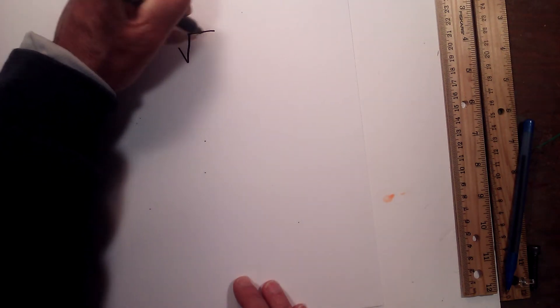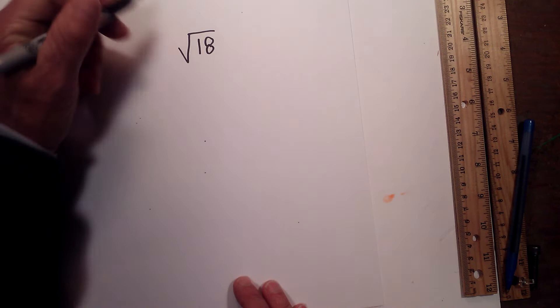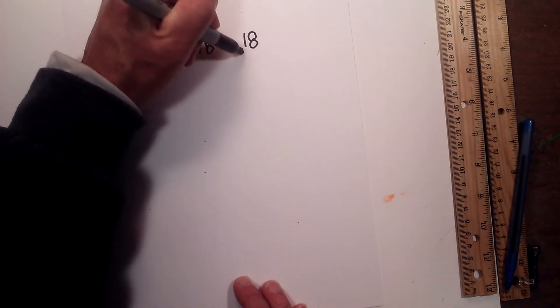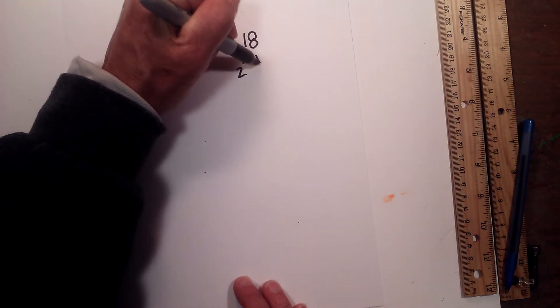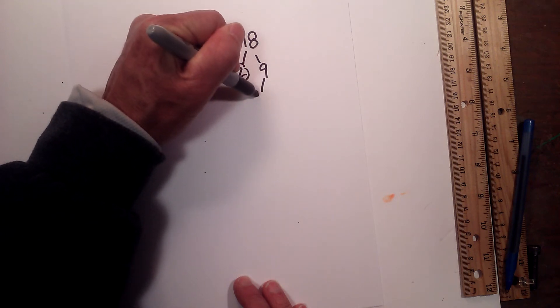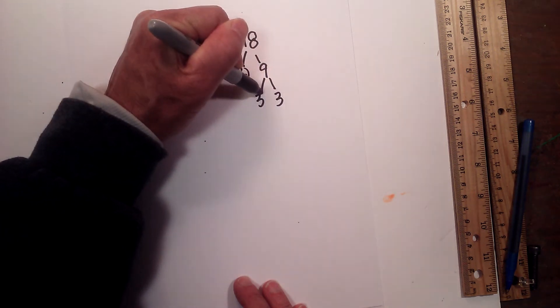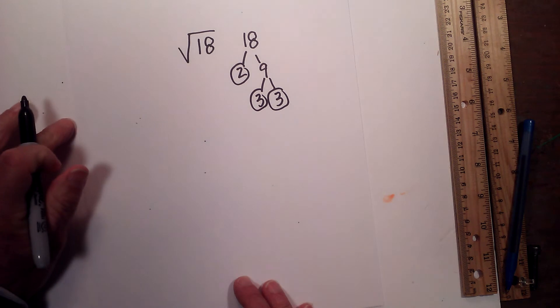Now, sometimes it doesn't work out exactly like this. So let me give you an example. Let's try the square root of 18. Square root of 18, create a factor tree. I have 2 times 9, circle the 2 because it is prime, and then 3 times 3, circle both of them because they are prime.